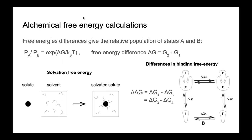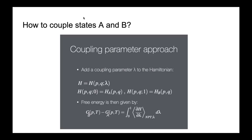This is a very powerful technique used in many different applications. The way to do this formally is the coupling parameter approach. You add a coupling parameter lambda to the Hamiltonian such that at lambda equals zero the Hamiltonian corresponds to state A, and at lambda equals one it corresponds to state B. This formally creates a path from state A to state B, and you can obtain the free energy difference by integrating the derivative of the Hamiltonian with respect to lambda — which represents the work needed to change the system from A to B.